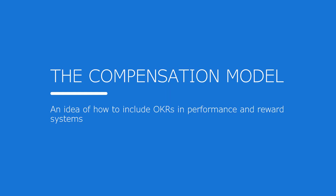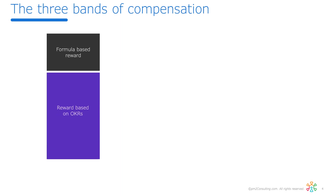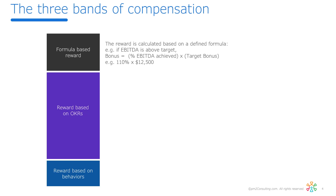First, let's talk about the comp model. The comp model typically has three bands of compensation. The formula-based reward is typically what you think of — I've got a hard number that's auditable like EBITDA, and I'm going to multiply it by some performance index. Hard calculated.